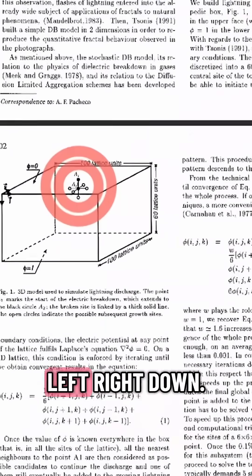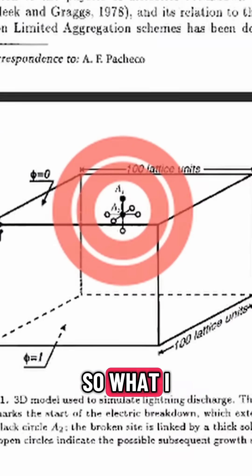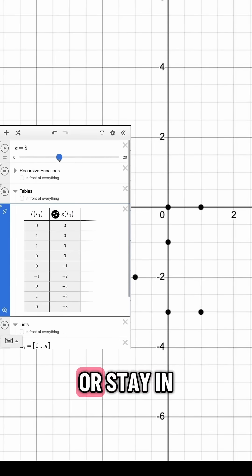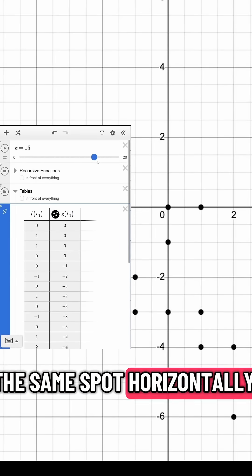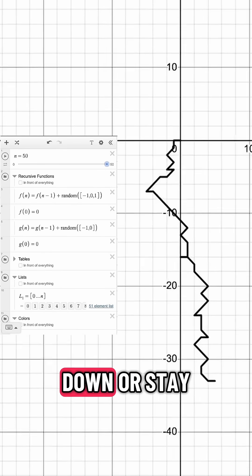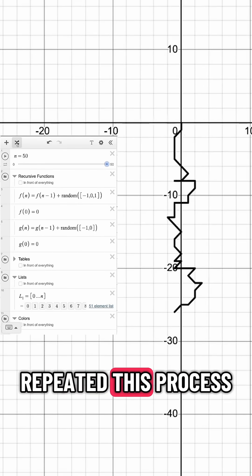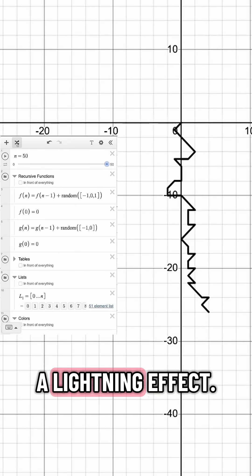You can have it go left, right, or down. So what I did was have it randomly either go left, right, or stay in the same spot horizontally, and I either had it go down or stay in the same spot vertically, and I just repeated this process until it made a lightning effect.